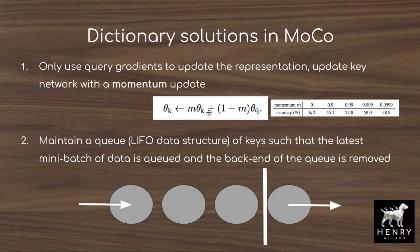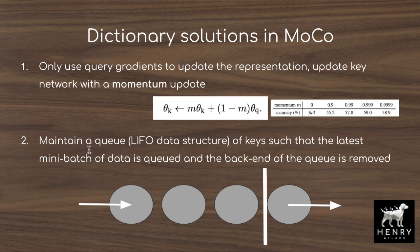With a momentum of 0.9999, the key encoder changes extremely slowly — it's essentially the same network with very small updates from the query. The queue maintains consistent, up-to-date keys: new batches are encoded and pushed to the front of the last-in-first-out queue, while the oldest encoded representations — from much earlier key encoder parameters — are popped out and discarded.